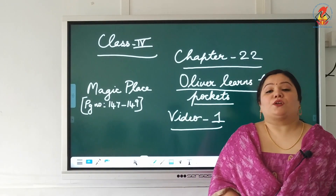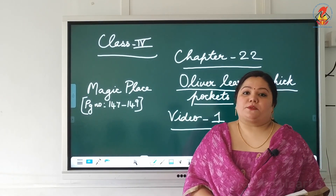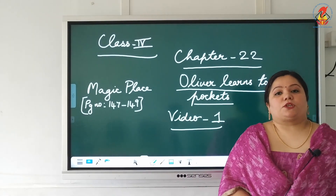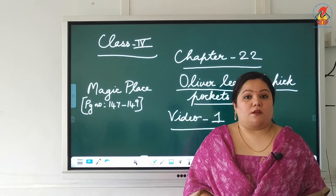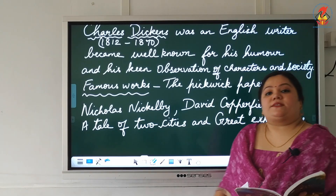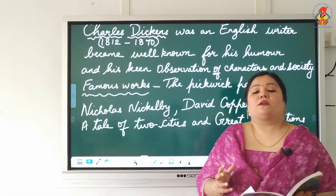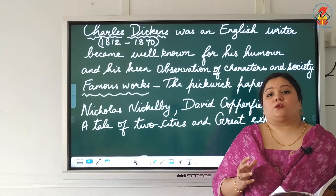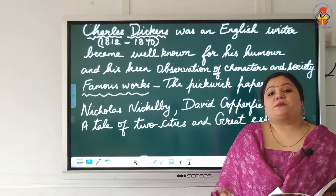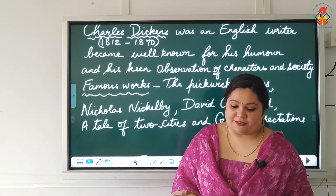Welcome children. Today we are going to learn the new chapter from the Magic Place textbook and the name of the chapter is 'Oliver Learns to Pick Pockets.' This is actually a small part taken from the main novel called Oliver Twist, written by the famous author Charles Dickens.